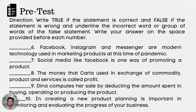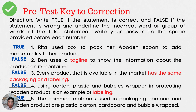Are you done? Let us check your work. Please be honest in checking your own work. Number 1: Rita used a box to pack her wooden spoon to add marketability to her product — True. Number 2: Ben uses a tagline to show the information about the product on its container — False. The word that makes it false is 'tagline.' Number 3: Every product that is available in the market has the same packaging and labeling — False. The words that make it false are 'has the same packaging and labeling.' Number 4: Using carton, plastic, and bubble wrapper in protecting a wooden product is an example of labeling — False. The word is 'labeling.' Number 5: The common materials used in packaging bamboo and wooden products are plastic, carton, cardboard, and bubble wrap — True.